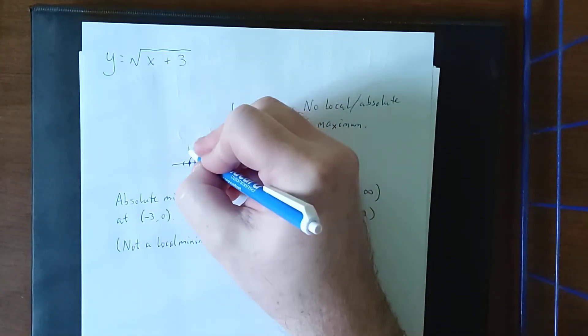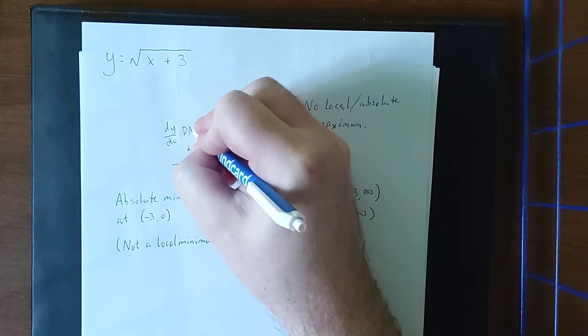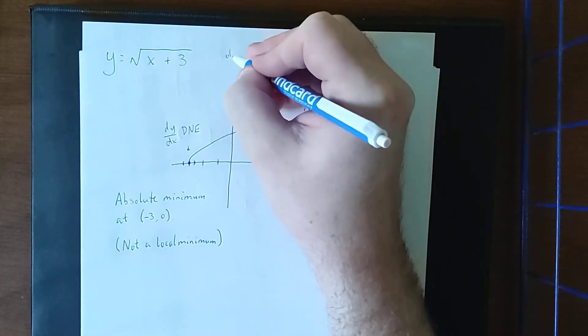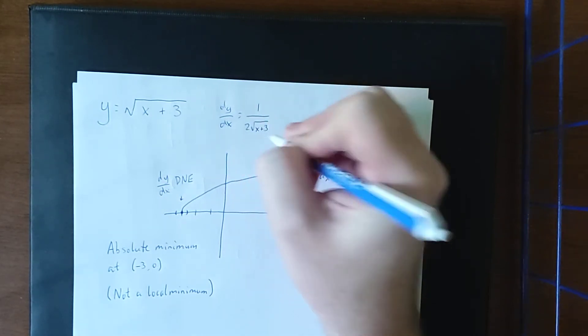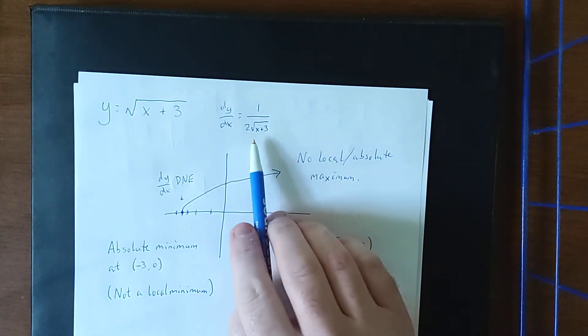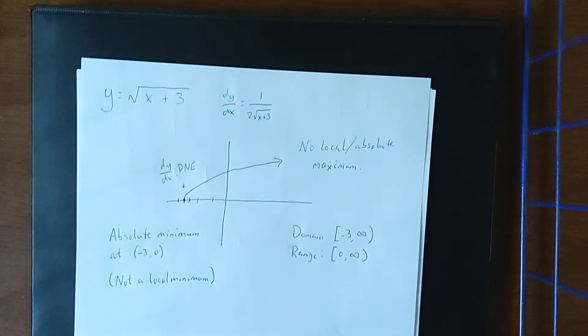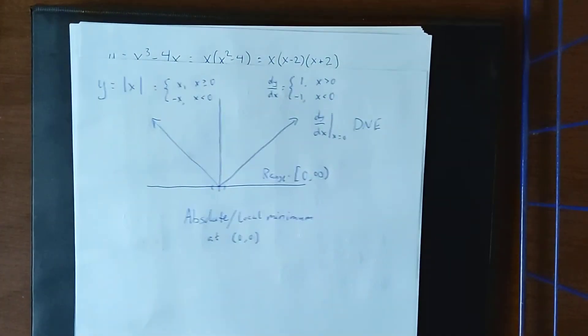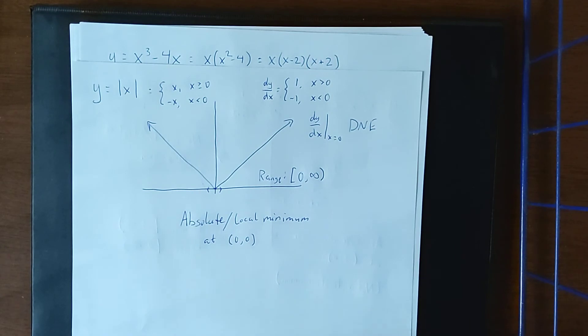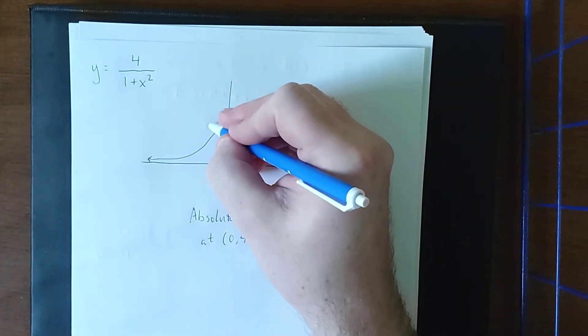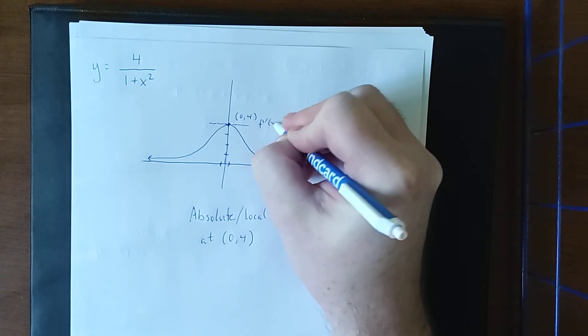So for our previous graph, if we were to analyze dy/dx at our absolute minimum, we would find that it does not exist. This is due to the fact that dy/dx, in this case, would be equal to 1/(2√(x + 3)). The proof is left as an exercise to the viewer. You'll notice that -3 is no longer within the domain of this function since it's now in a denominator. Therefore, the derivative does not exist at that point. Continuing backwards, we already talked about this one for the absolute value, but the derivative does not exist at this point.